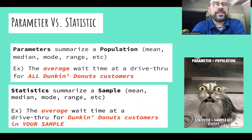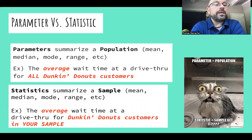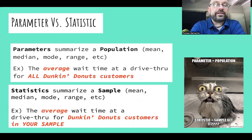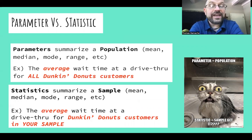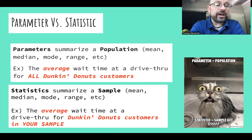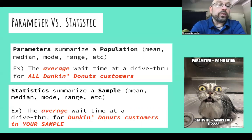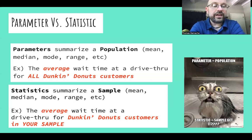For parameter versus statistic: parameters summarize a population. They can be means, medians, modes, ranges, etc. An example would be the average wait time at a Dunkin Donuts drive-thru for all customers. A statistic summarizes a sample — again, it can be a mean, median, mode, range, etc. An example would be the average wait time at a Dunkin Donuts drive-thru for customers within your sample. Notice that parameter and population both begin with a P — they go together. Statistics and samples both begin with an S. Parameters summarize populations; statistics summarize samples.